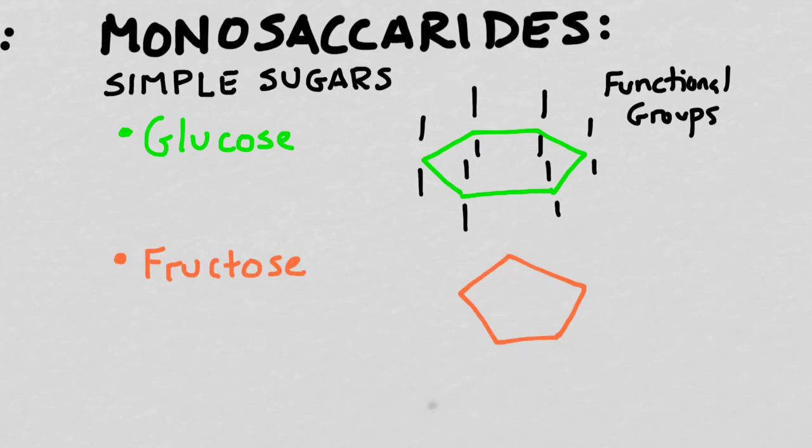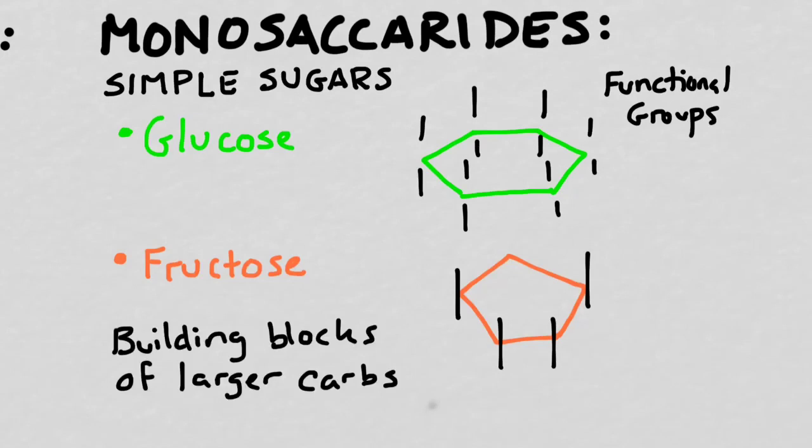Another common monosaccharide is something called fructose, which also has a ring structure, but this is actually a pentagonal ring structure instead of a hexagonal ring structure. Fructose also has a series of functional groups added to the outside of its ring. I'm not going to go into details about exactly what these functional groups are, because we're going to build these hands-on in class. One of the most important things to remember as we move forward is that these are actually going to be the building blocks of larger carbs.